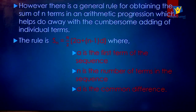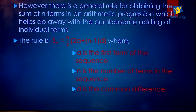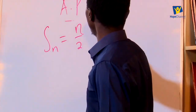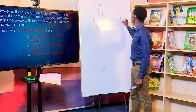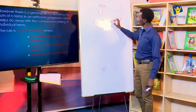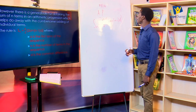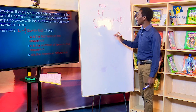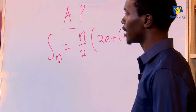The sum of n terms in an arithmetic progression is given as Sn equals n over 2 into 2a plus n minus 1 times d. Where a is the first term, n is the number of terms, and d is the common difference. If you have all that information, we can get the sum of a given number of terms in an arithmetic progression.